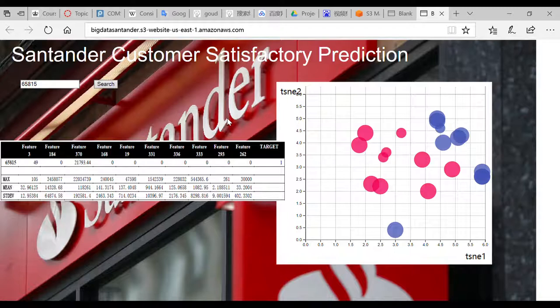Now, we can see that the target value is 1, which means this one is extremely unsatisfied. We can see that the feature 370 is much smaller than the mean value of satisfied customers, which means maybe we can take some actions to try to increase this value in the future so that this one will be more satisfied.